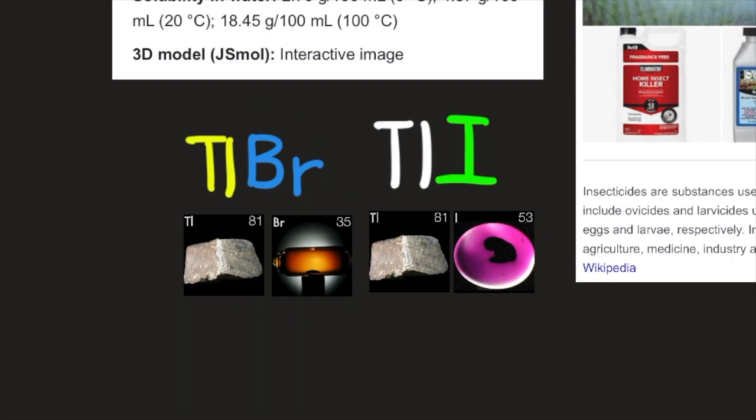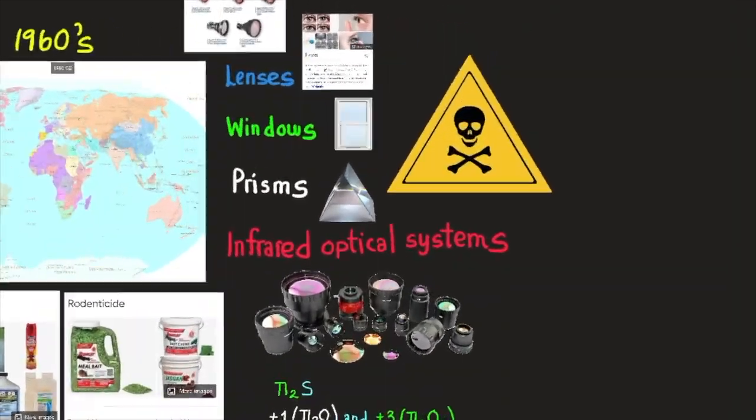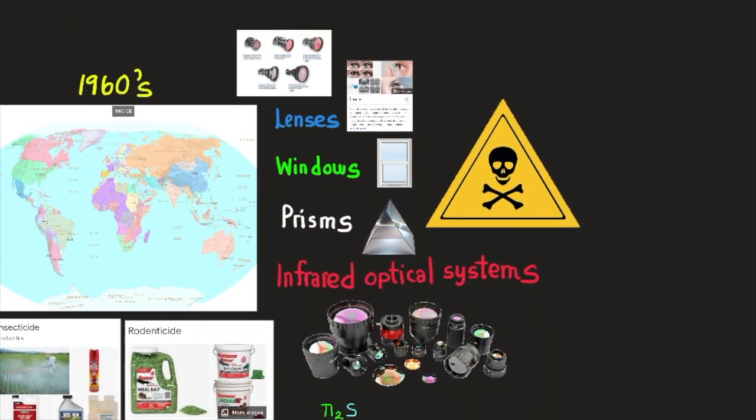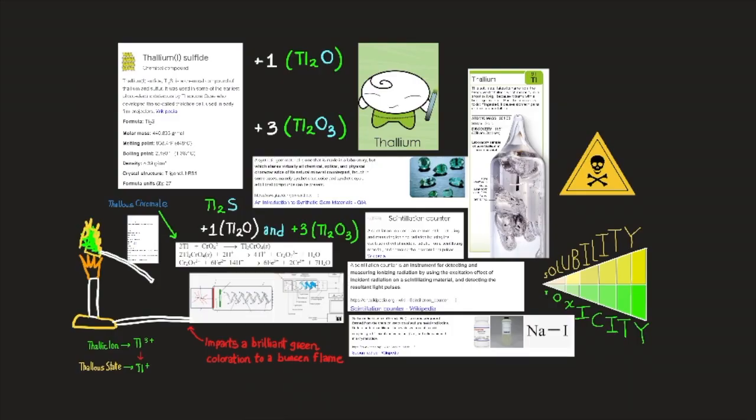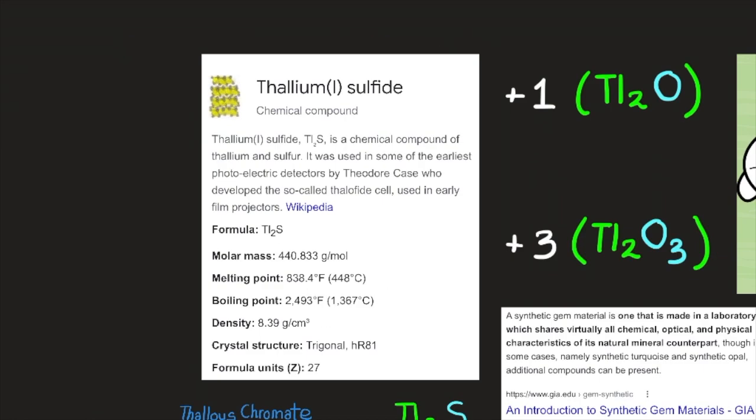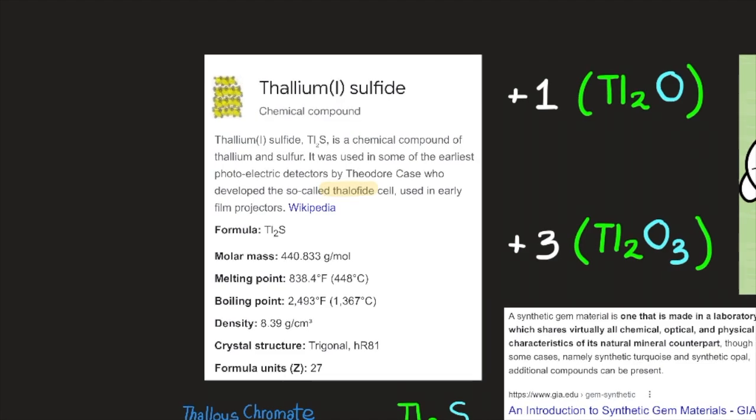There you can find the iodine and the bromine video. So these crystals transmit infrared light that have been fabricated into lenses, windows, and prisms for infrared optical systems. The sulfite TL2S has been employed as the essential component in a highly sensitive photoelectric cell, and the oxysulfite in an infrared sensitive photocell, thallophyte cell.